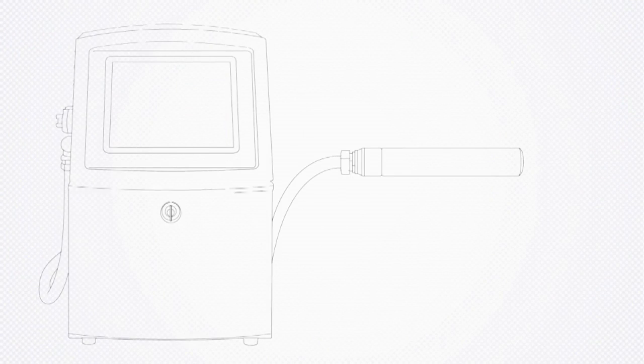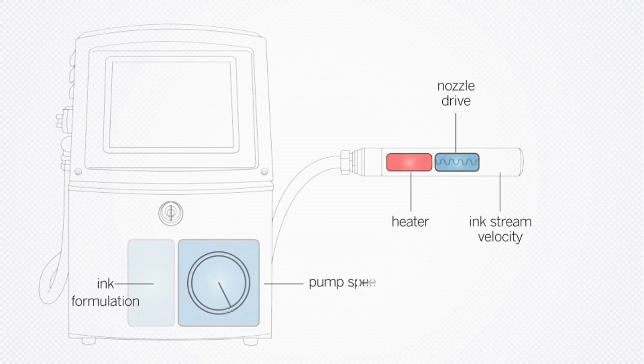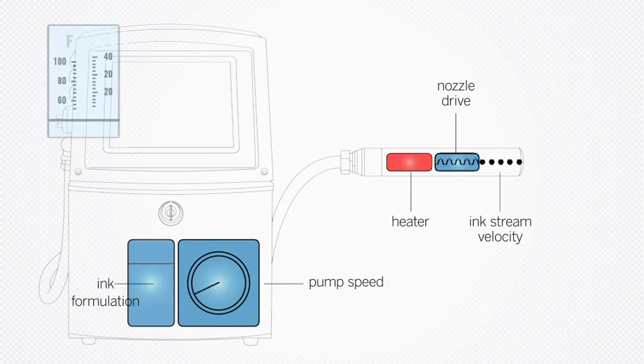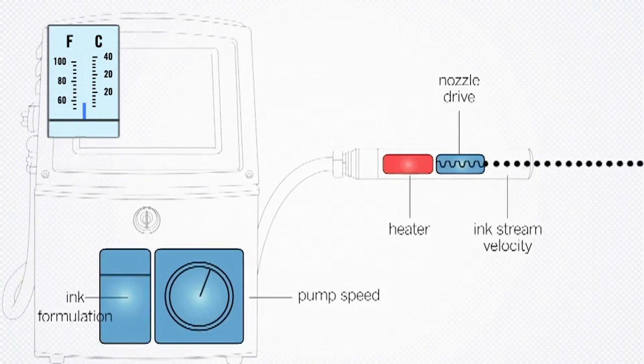The system maintains constant jet velocity, ink viscosity, and drop formation by dynamically controlling pump speed, nozzle drive, and printhead heater temperature.